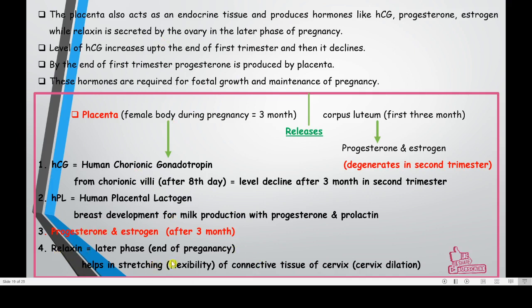In the later phases of pregnancy, the placenta also releases relaxin hormone. Relaxin helps in the stretching of the connective tissues of the cervix — this is called cervix dilation. Because of cervix dilation, the birth canal becomes flexible so that the baby can come out of the uterus.